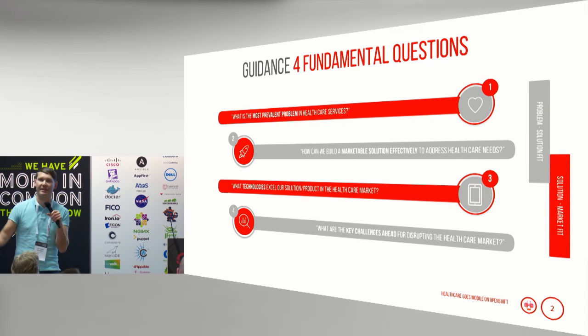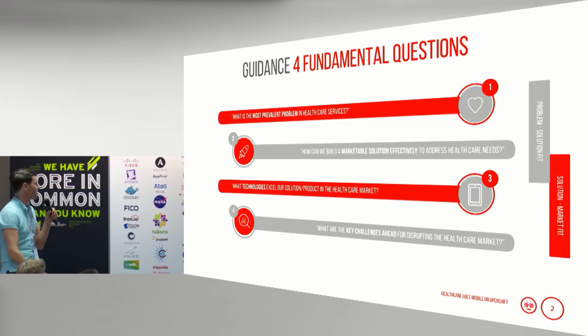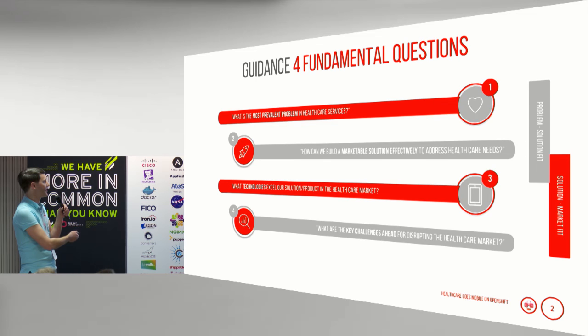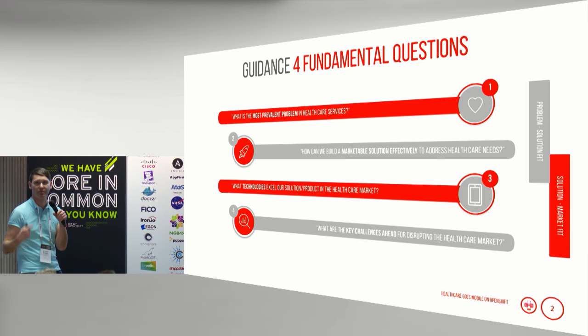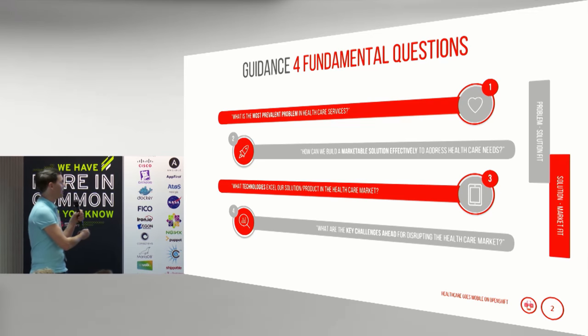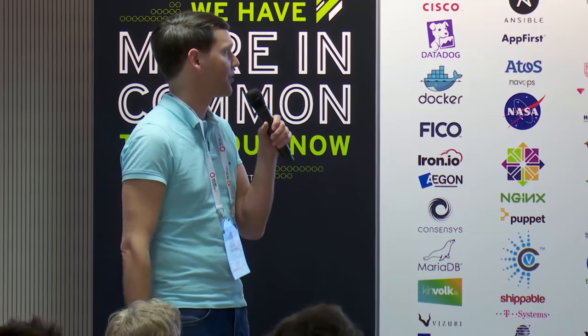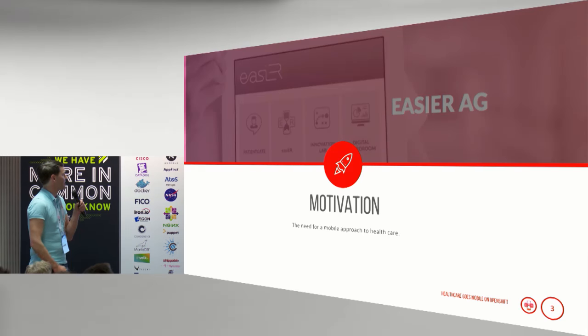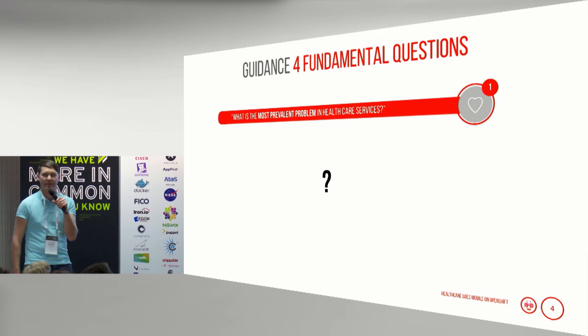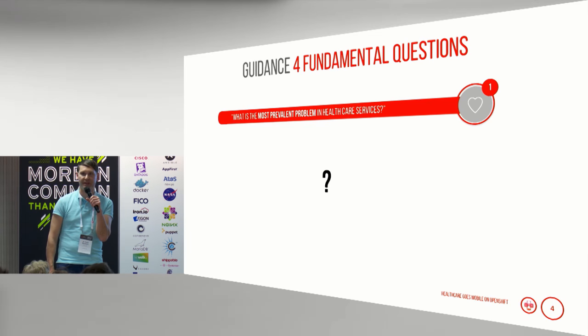I have four fundamental questions that come from the actual application we built. What is one of the most prevalent problems in healthcare? How can we build not just an MVP but a marketable solution for our industry? What technologies do we want to use - and of course we use the OpenShift environment - and what are the key challenges ahead, including how can we scale on the OpenShift platform?